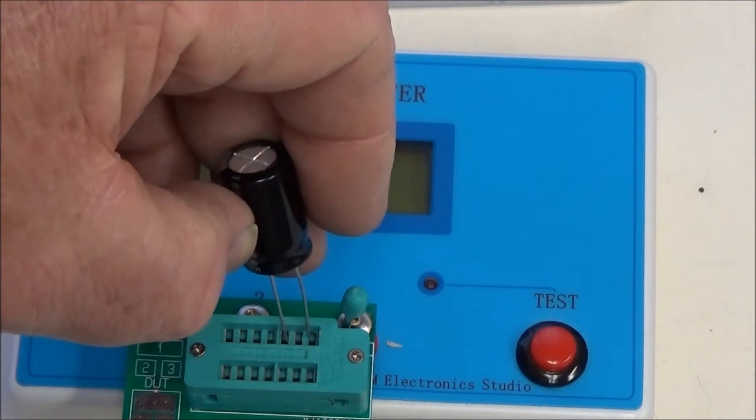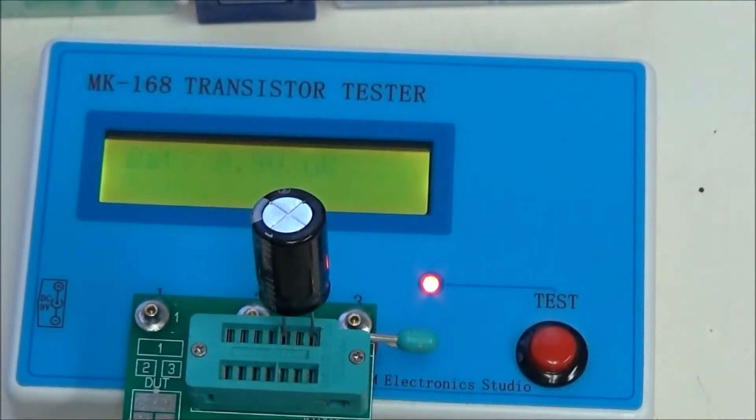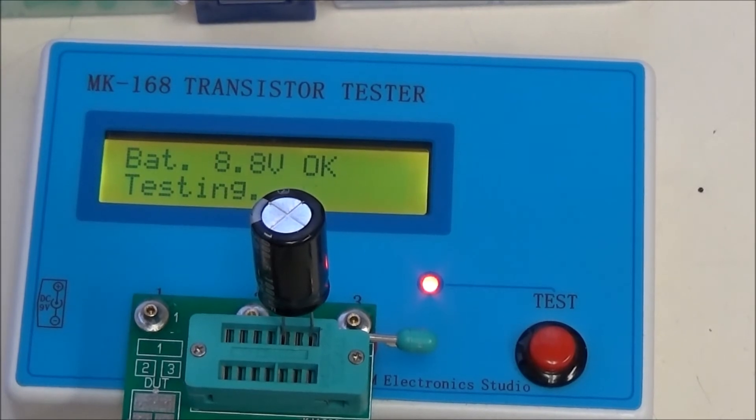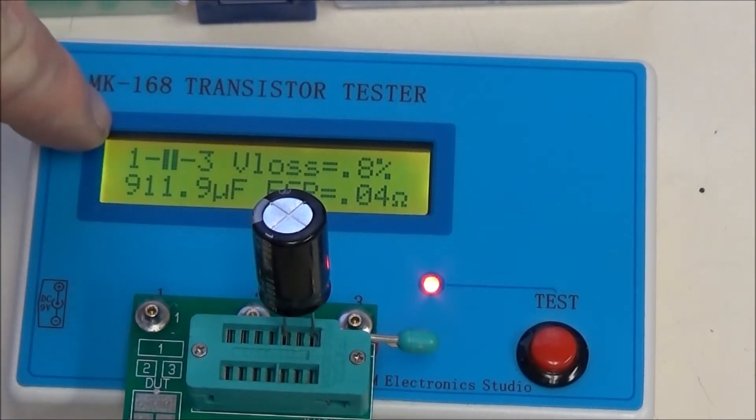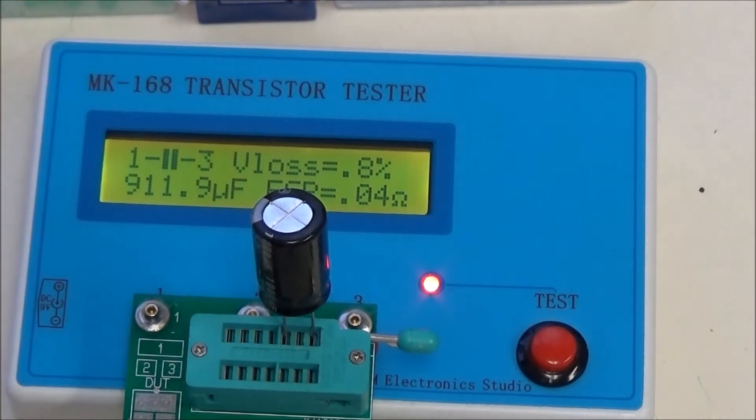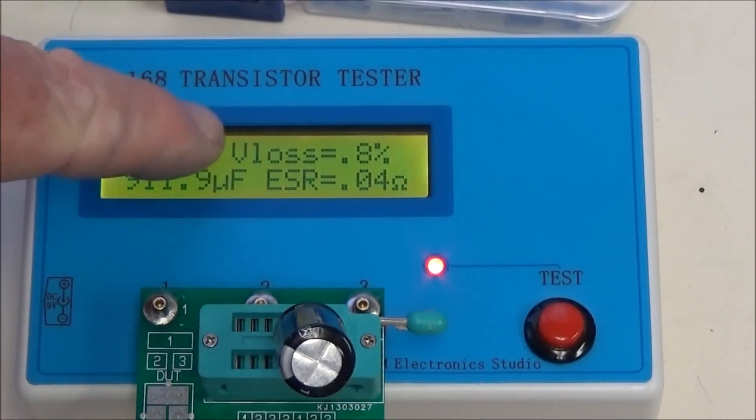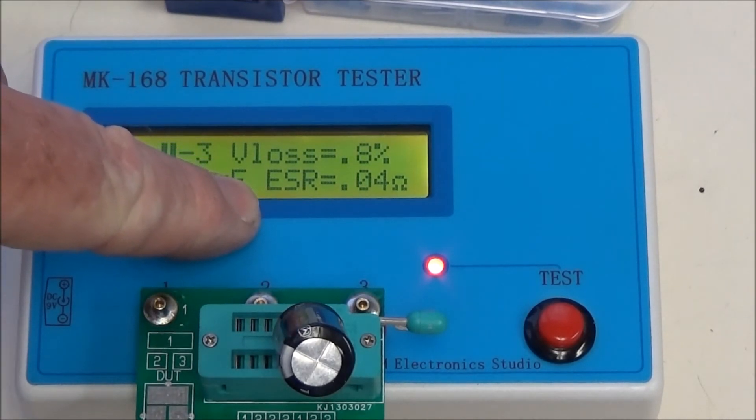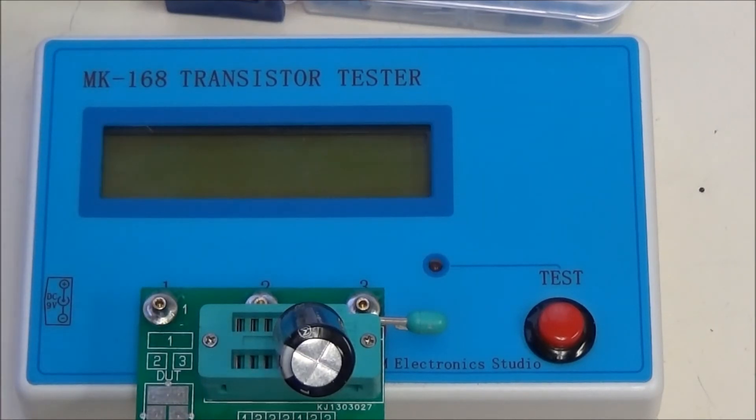This is one that I bought new. Let's see how it does. All right, 911 microfarads. It's rated at a thousand, that's within specs. It tells you that it's connected to 1 and 3. But notice loss - that's losses through the electrolyte, through the plates and whatever. But this is something you need to note: ESR equals 0.4 ohms.